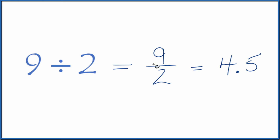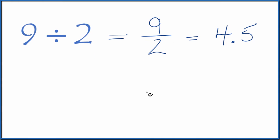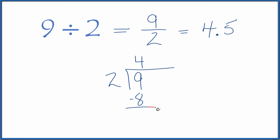You could also divide 9 by 2 longhand. So you take 9, and you want to see how many times 2 goes into 9. So 4 times 2 is 8. And if we subtract, we have 1 left over.